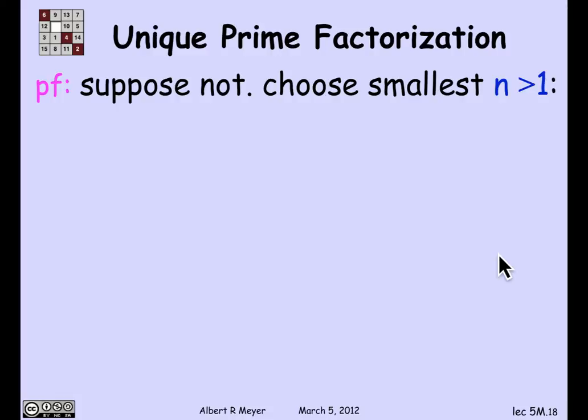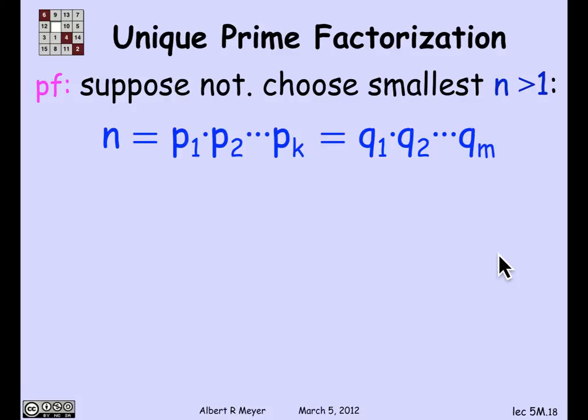How are we going to prove that? Suppose it wasn't true — suppose some number could be factored in two different ways. By the well-ordering principle, there's a least such number greater than 1. Call it n. So n equals the product p₁ through pₖ, and also equals another product q₁ through qₘ, where all the p's and q's are prime, listed in weakly decreasing order, and the two sequences are not the same.